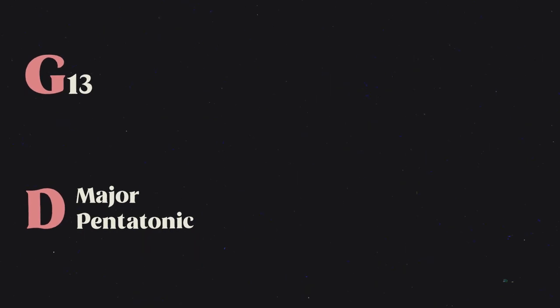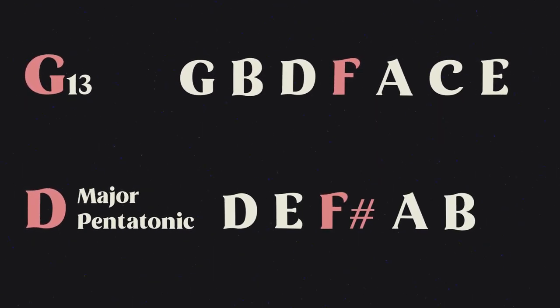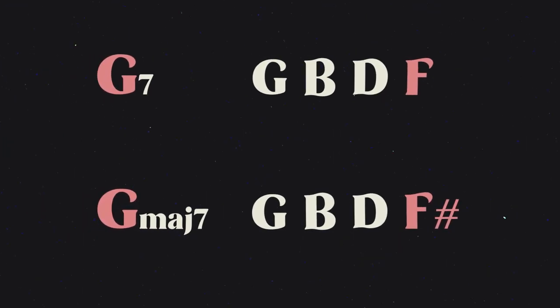There is a little problem with Tony's trick though. The danger is when you imply the wrong upper extensions with your chosen pentatonic scale. For instance, with a G13 chord, Tony plays a D major pentatonic over it. A G13 chord would have an F natural in it, while the D major pentatonic would have an F sharp in it. That particular note — the F — is the difference between a G major 7 chord and a G7 or G13 chord.